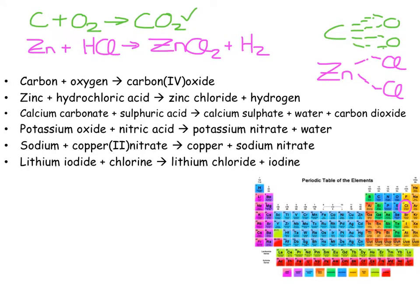One zinc on the left, one zinc on the right. One hydrogen on the left, two hydrogens on the right, so put a 2 in front. Now two hydrogens on each side, two chlorines on each side — balanced.